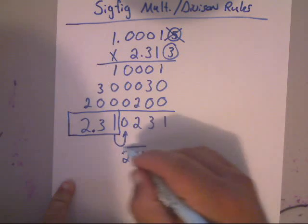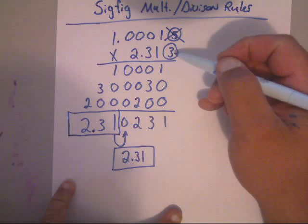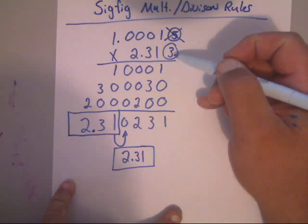So the rule is, you pick the one with the least amount of sig figs. And you start with the very front of the number and work your way down.